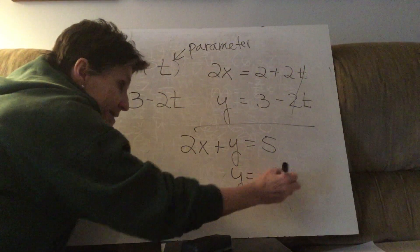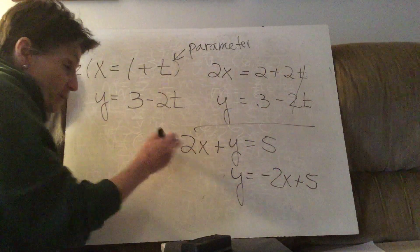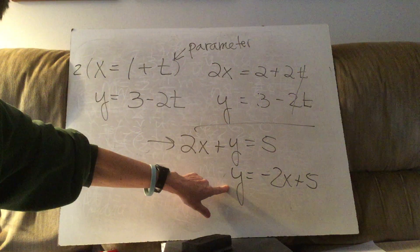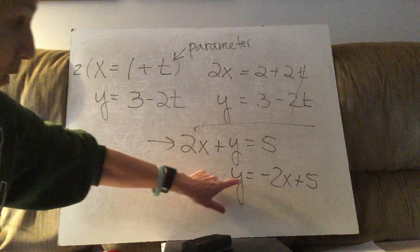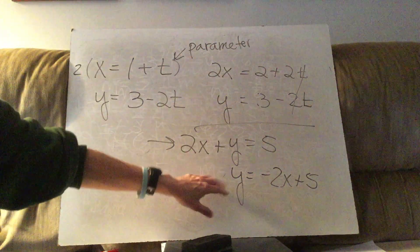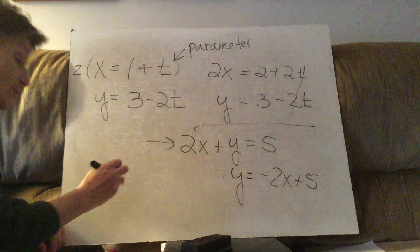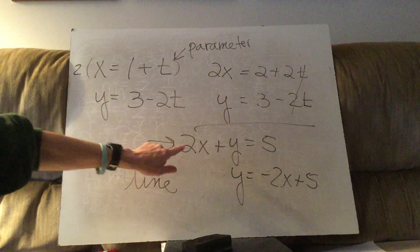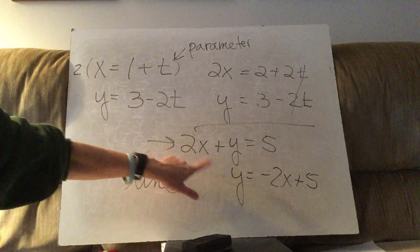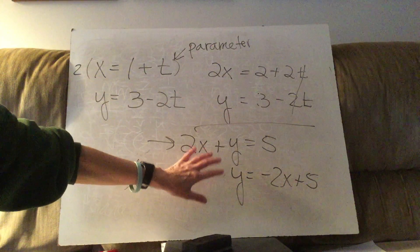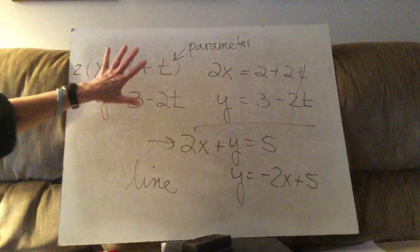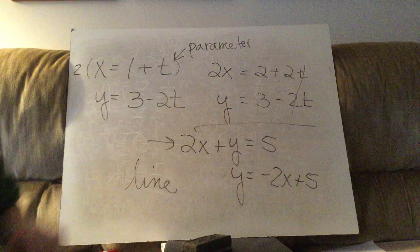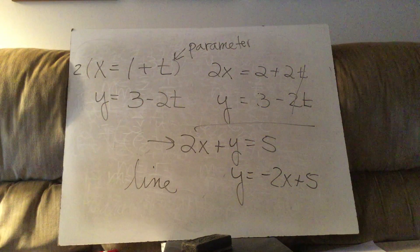So 2x plus y equals 5, or equivalently y equals negative 2x plus 5. You have to identify the curve — since this is y equals mx plus b, this is a line. You have eliminated the parameter: instead of two equations with x's, y's, and t's, you now have one equation with just x's and y's.